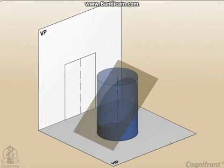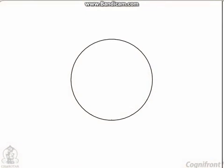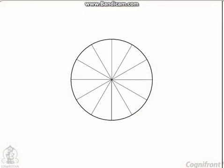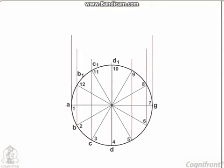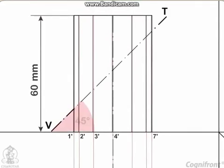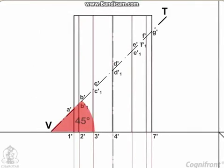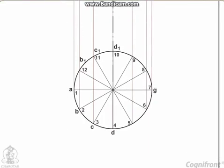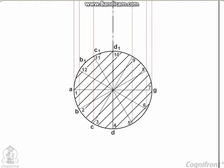As the cylinder has no edges, a number of lines representing the generators may be assumed on its curved surface by dividing the base circle into 12 equal parts. Name the points at which these lines are cut by the VT. In the top view, these points lie on the circle, and hence the same circle is the top view of the section.